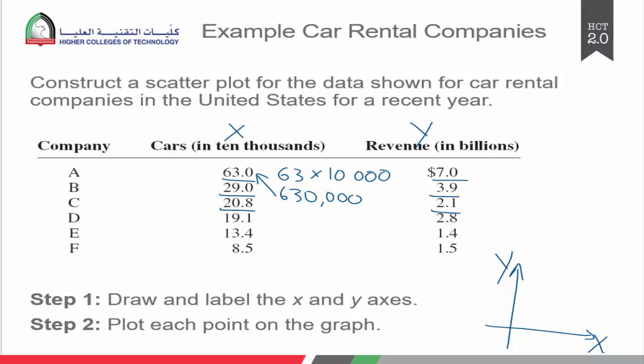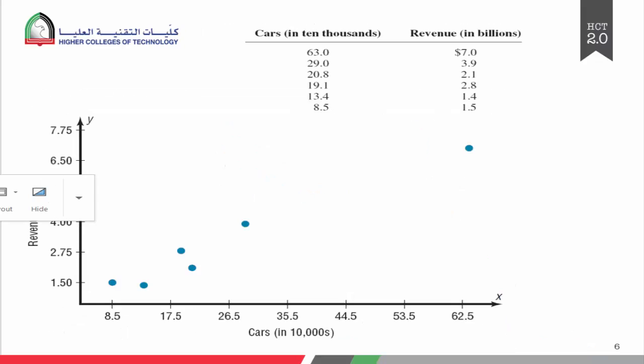Once we realize what is on the x and what is on the y, so what is independent and dependent, we can draw our scatter diagram.